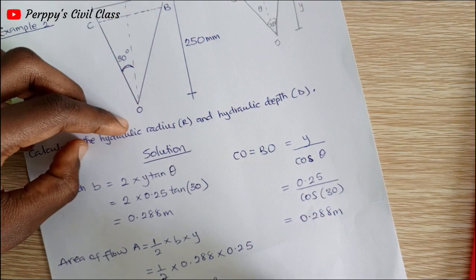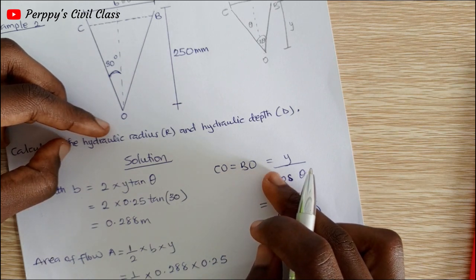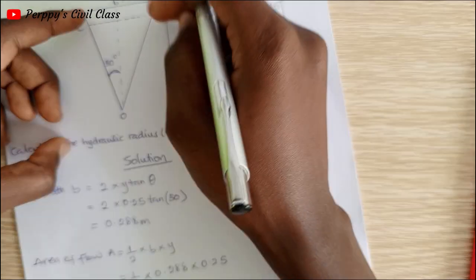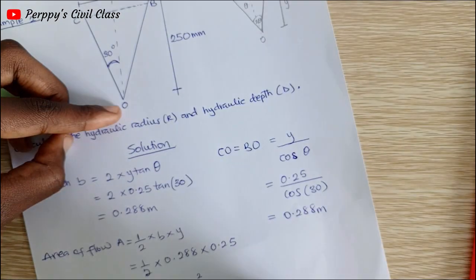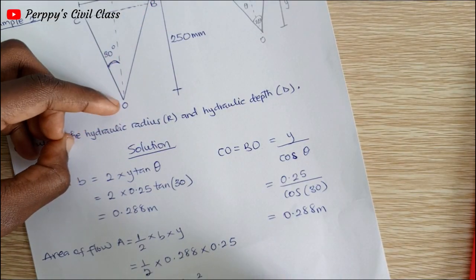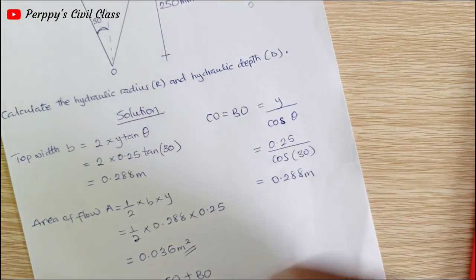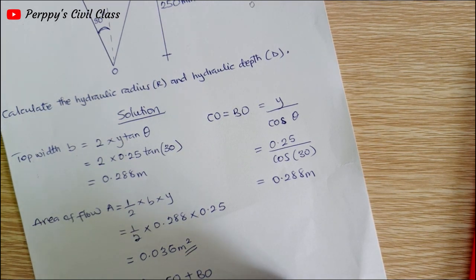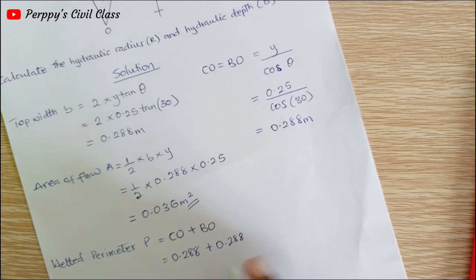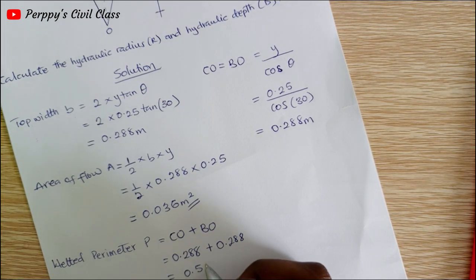That is CO and BO. We know that CO is equal to BO. The area around our triangle is CO plus BO, so 0.288 plus 0.288. When we add this together we're going to get 0.576 meters.